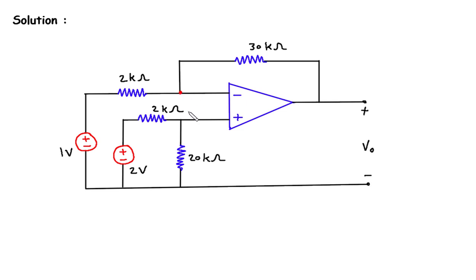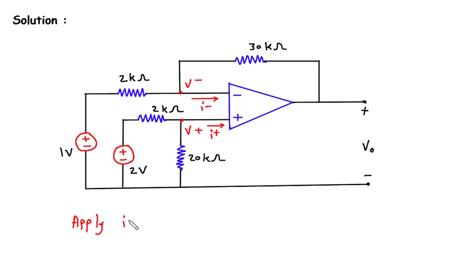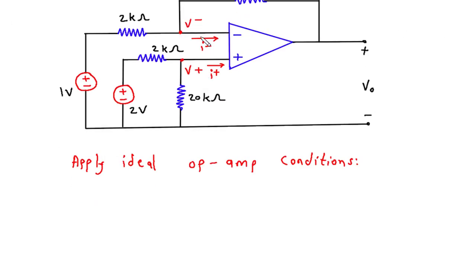We will redraw the circuit. We are assuming this is an ideal op-amp. Let's say this node voltage is V− and this node voltage is V+. This current is I− and this current is I+. We will apply the ideal op-amp conditions: V+ equals V−, and I+ equals I− equals 0.